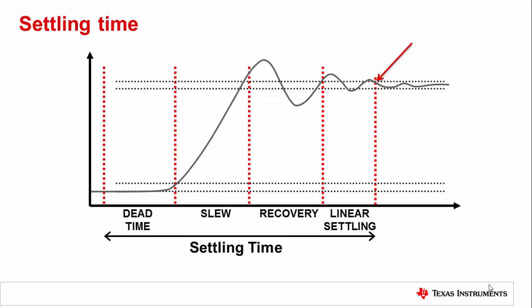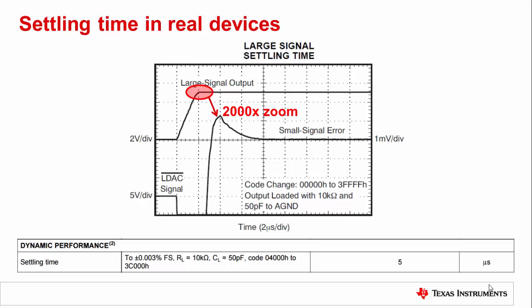In many applications, analog settling time is the dominant figure to consider for a DAC's update rate, even if the serial interface is capable of running faster. This is a capture taken from the DAC9881 datasheet. The settling time measurement is made from when the LDAC signal has fallen low and the input data word begins to propagate through the system. Notice that the dead time is very short, large-signal settling time is pretty well behaved, and the settling time is primarily spent in the linear settling or small-signal settling region.